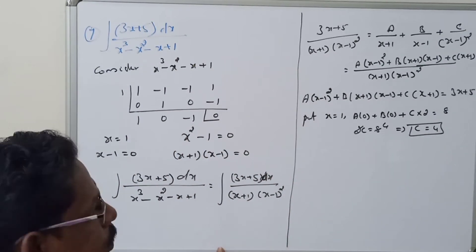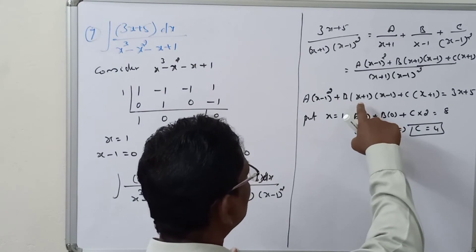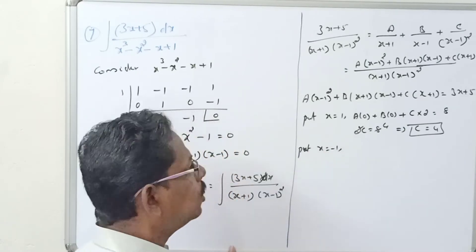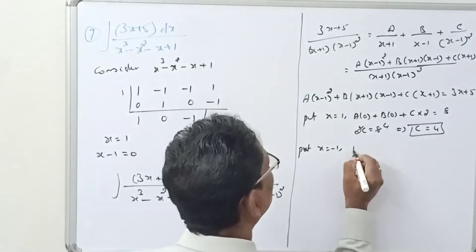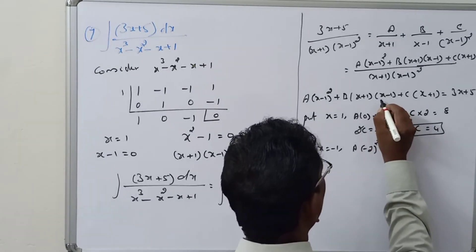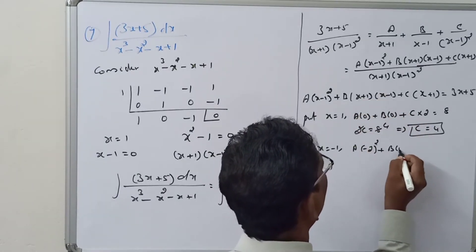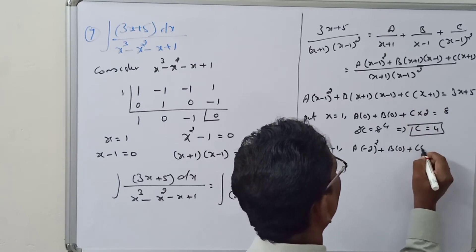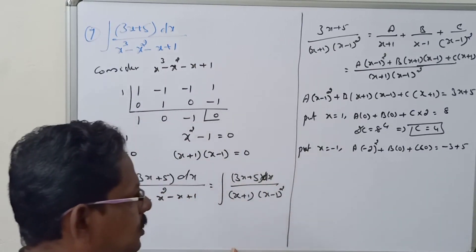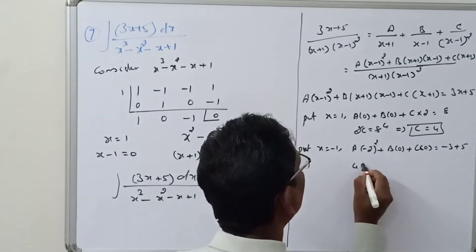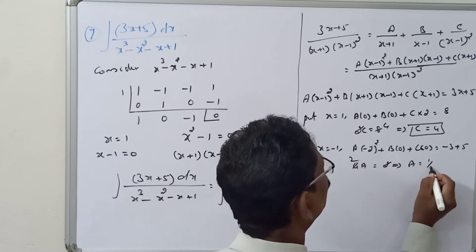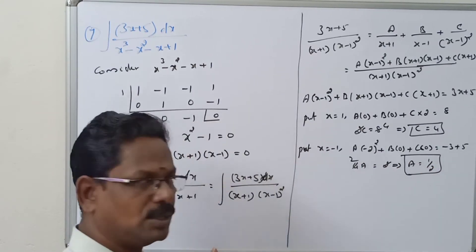Now for the other factor (x + 1), put x = -1: A(-1 - 1)² + B×0 + C×0 = -3 + 5, so A×4 = 2, which gives A = 1/2.